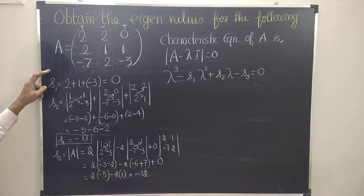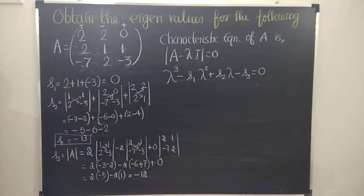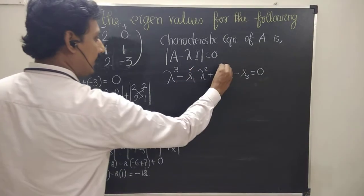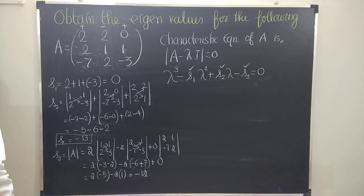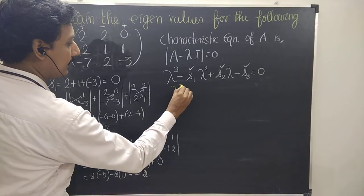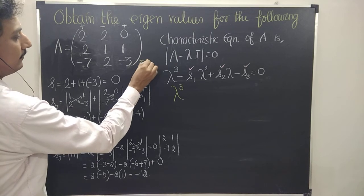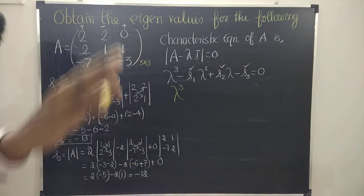So to summarize: S1 is 0, S2 is minus 13, and S3 is minus 12. Now I can substitute in the place of S1, S2, and S3. I am getting the cubic polynomial — why? Because this is a 3 by 3 matrix, which gives a cubic polynomial. If you solve the cubic polynomial, you get 3 eigenvalues.